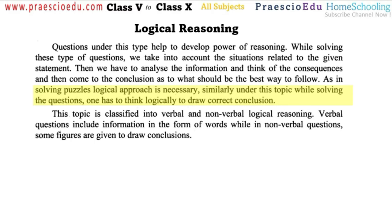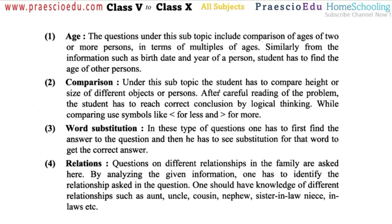There is no formula and no tricks. Only the questions give some information, and that information we have to think about and logically give the answers. In that, the topics are age comparisons, word substitution, and relation — these are the four main types. In age, there are some comparisons between two persons' ages, or the difference is given, or sometimes a date is given and from that we have to calculate the current age.